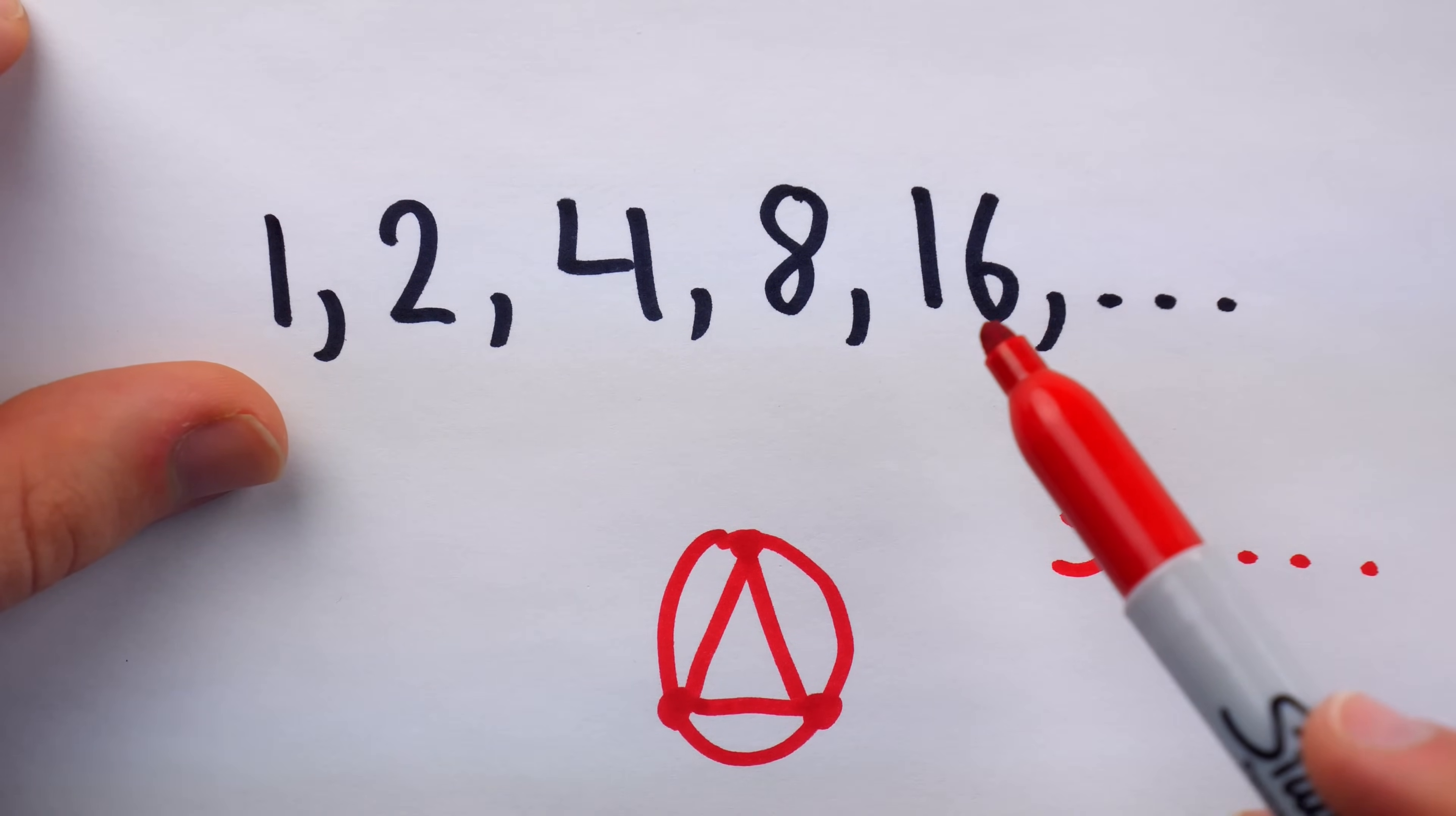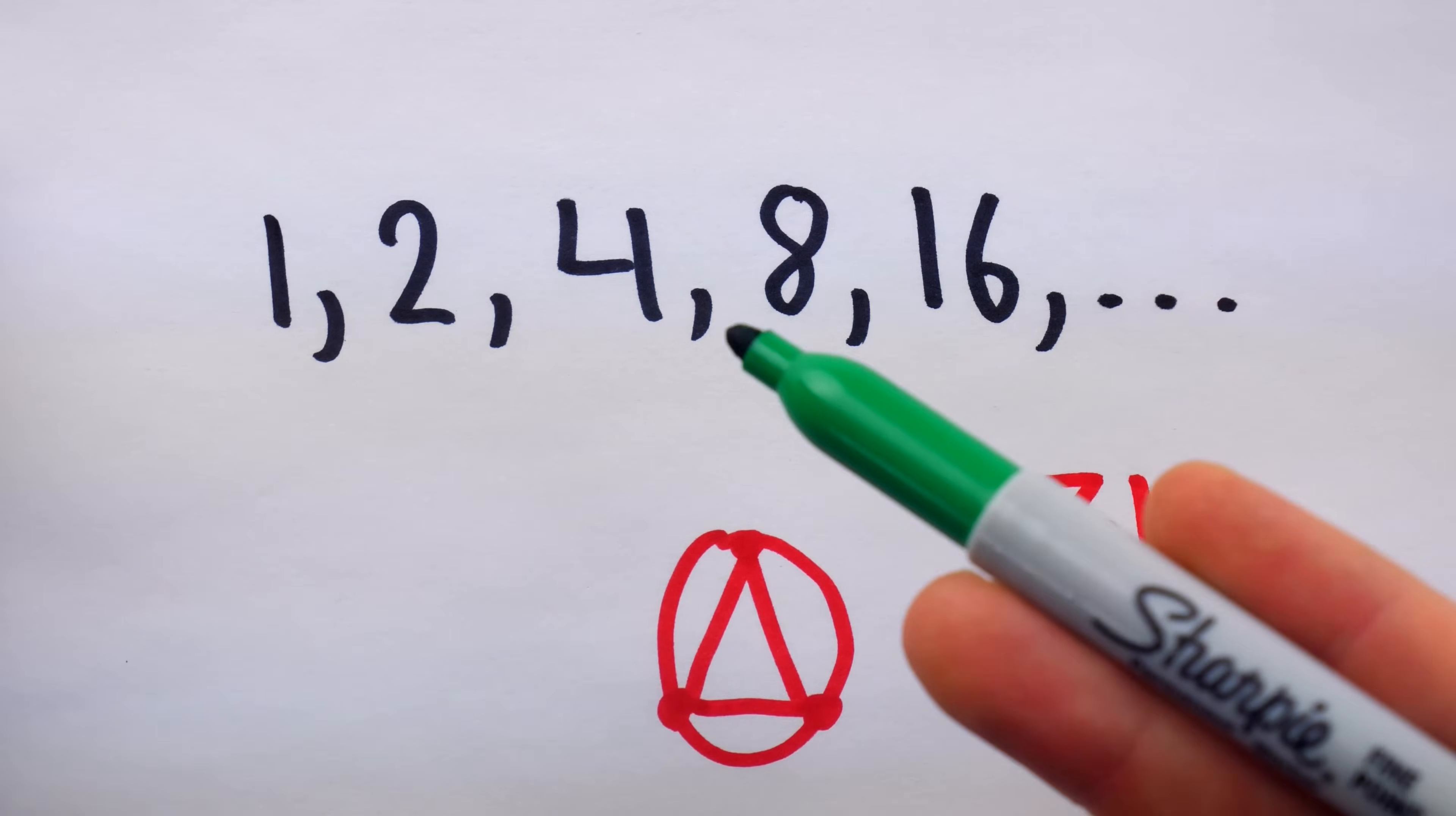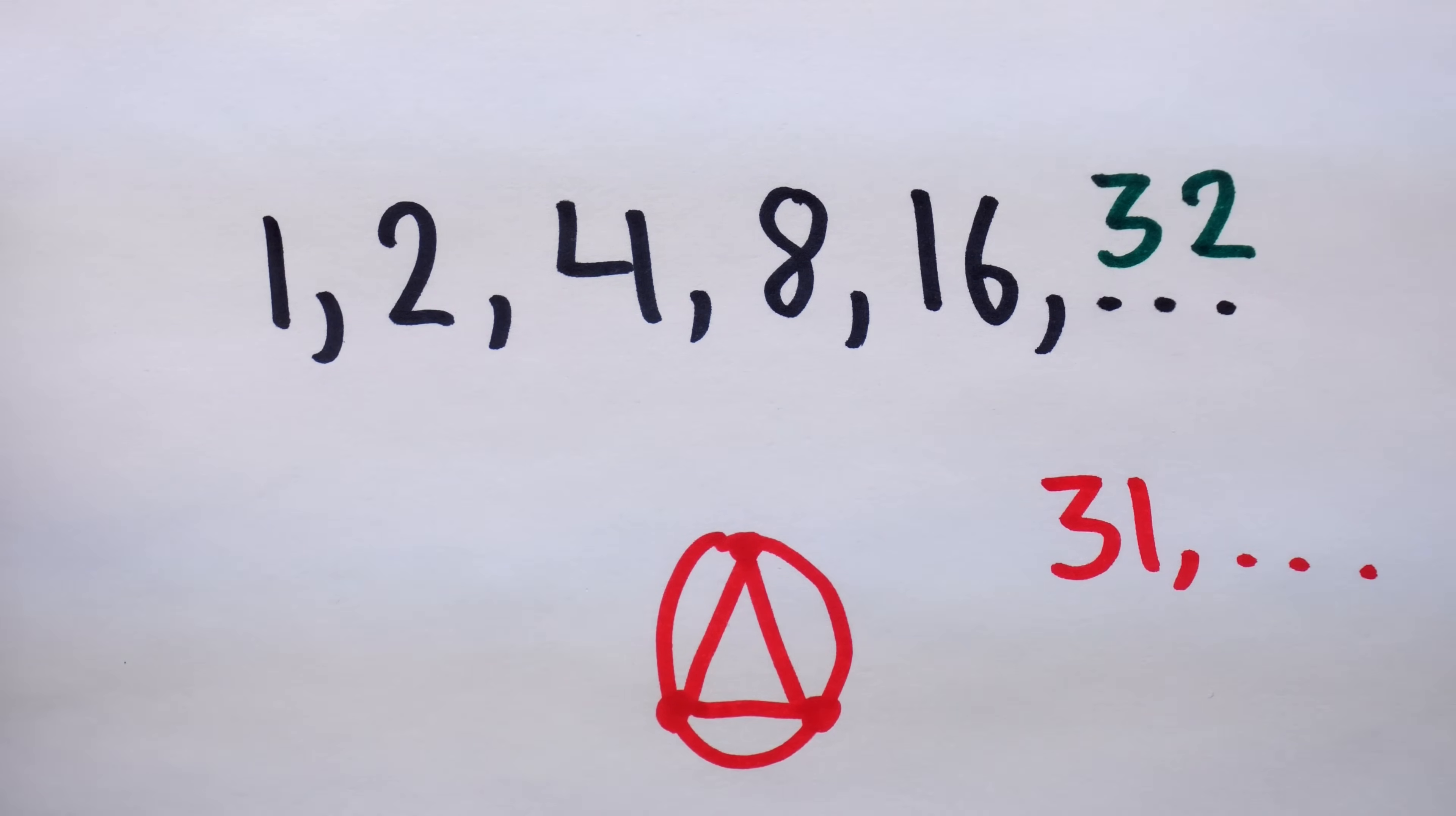32 isn't the number that comes next in every instance of this sequence. But what makes this an acceptable way to specify a sequence is that there is a very clear, most obvious pattern, which is that each term is doubling to get the next term, and so the most obvious next term would be 32. And without any additional context, this is what every reasonable person would think the sequence is.